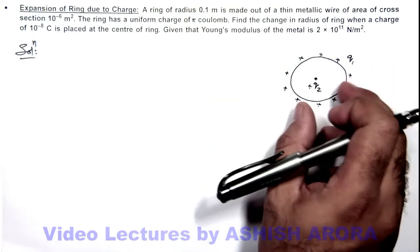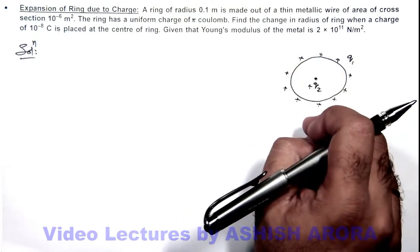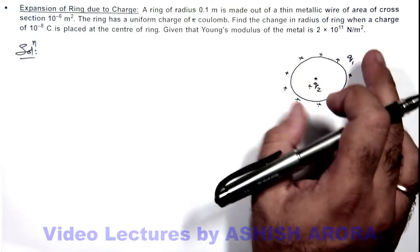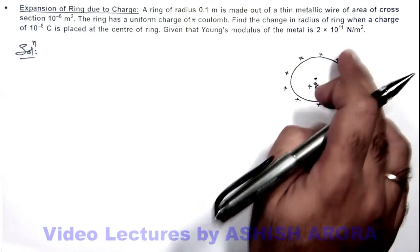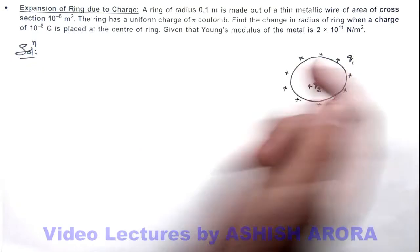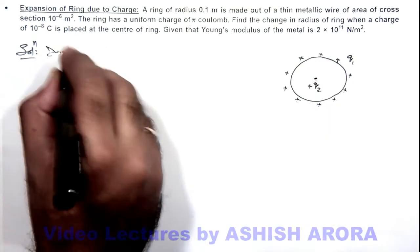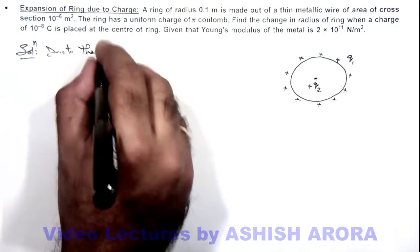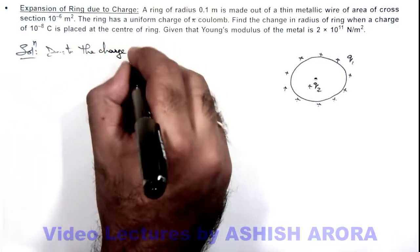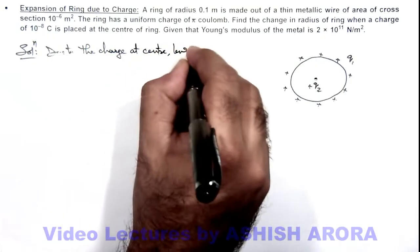In this situation, the ring will develop an increase in tension. Due to this radially outward repulsive force, we can directly calculate the tension increment in the ring, which we already studied earlier.